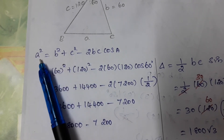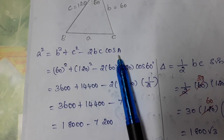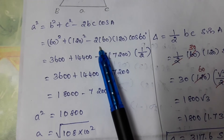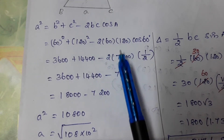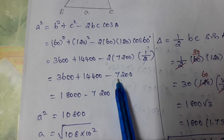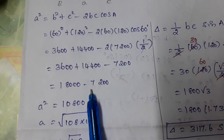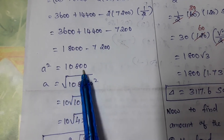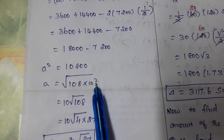Applying the cosine formula: A² = B² + C² − 2BC·cos(A). With sides b = 120 ft, c = 60 ft and angle A = 60°, cos(60°) = 1/2, so the 2 cancels. This gives A² = 14400 + 3600 − 7200 = 10800.